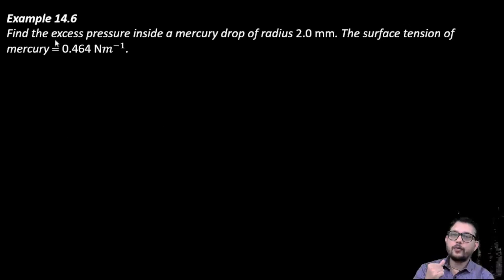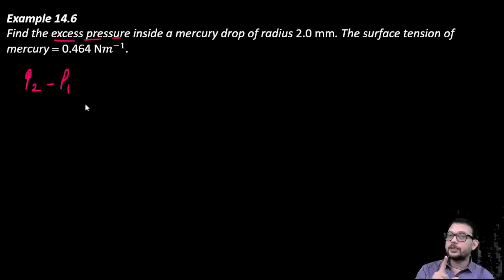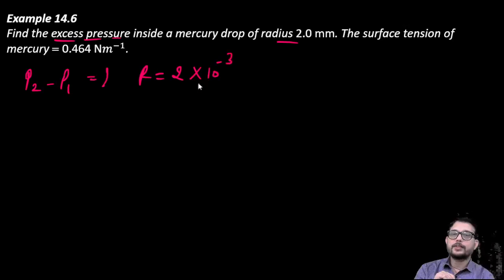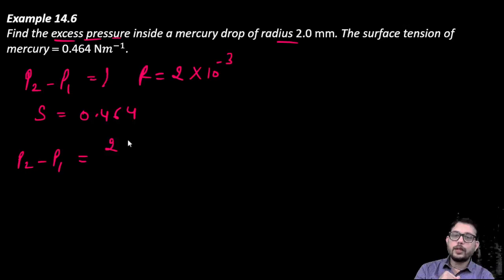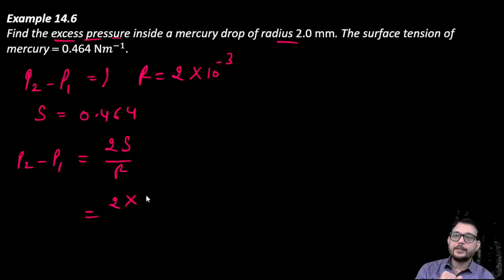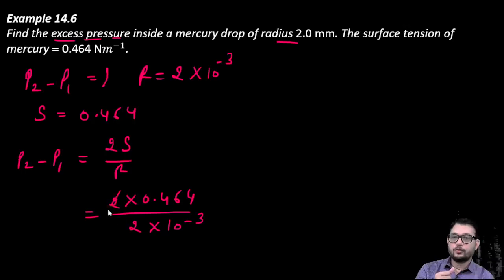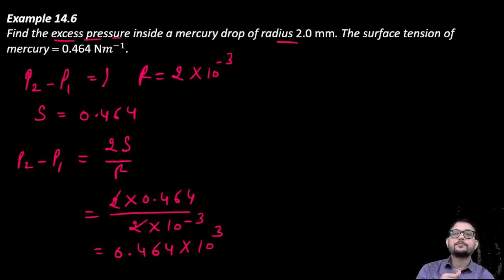Now see a numerical based on this. We have to find the excess pressure. Excess pressure is P2 minus P1, which equals 2S upon R. The radius is given as 2 mm, which is 2 times 10 to the power minus 3 metres. Surface tension S is 0.464 N/m. Putting in the values: 2 times 0.464 divided by 2 times 10 to the minus 3. This gives 0.464 times 10 to the power 3 Pascals. That is your answer.